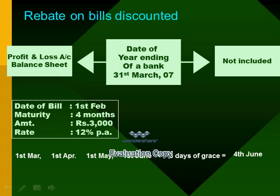Let us first calculate the date of maturity of the bill. Counting 4 months from 1st February: 1st February to 1st March is 1 month, 1st April is 2, 1st May is 3, 1st June is 4, plus 3 days of grace — so the date of maturity of the bill will be 4th of June. Out of this period, 2 months are falling prior to the date of year ending and 2 months are falling after the date of year ending of the bank.